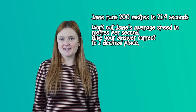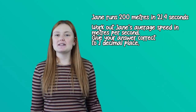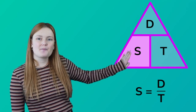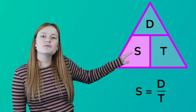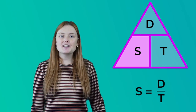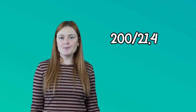For example: Jane runs 200 meters in 21.4 seconds. Work out her average speed in meters per second. We are finding speed, so let's bring back our triangle and cover up speed. We're left with distance over time, so we divide. We're going to do 200 divided by 21.4, which gives us an answer of 9.3 meters per second.